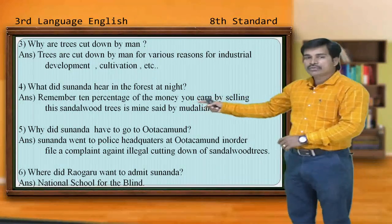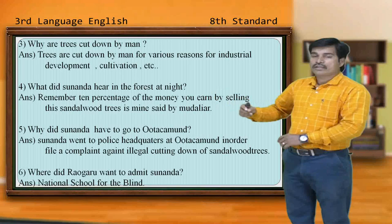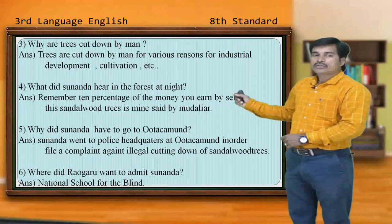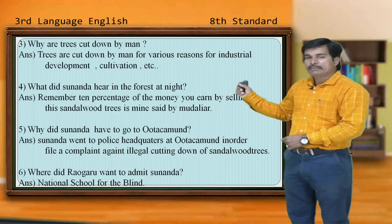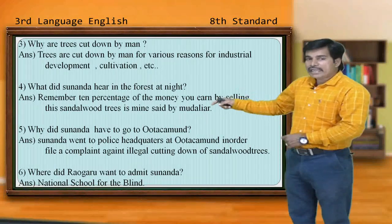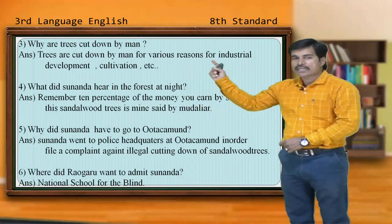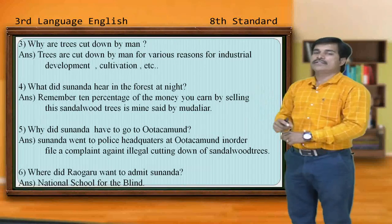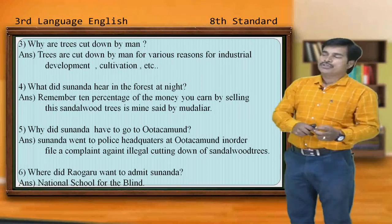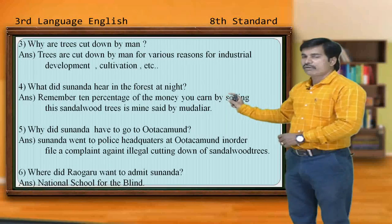The next question: Why did Sunanda have to go to Utakamand? In the lesson we come across a headquarters over there. Sunanda went to the police headquarters at Utakamand in order to file a complaint — mainly against the illegal cutting down of sandalwood trees. Though she had lost her eyesight, she bravely took this particular issue to the police headquarters to file a complaint against the illegal cutting down of trees. That is the point you have to remember.